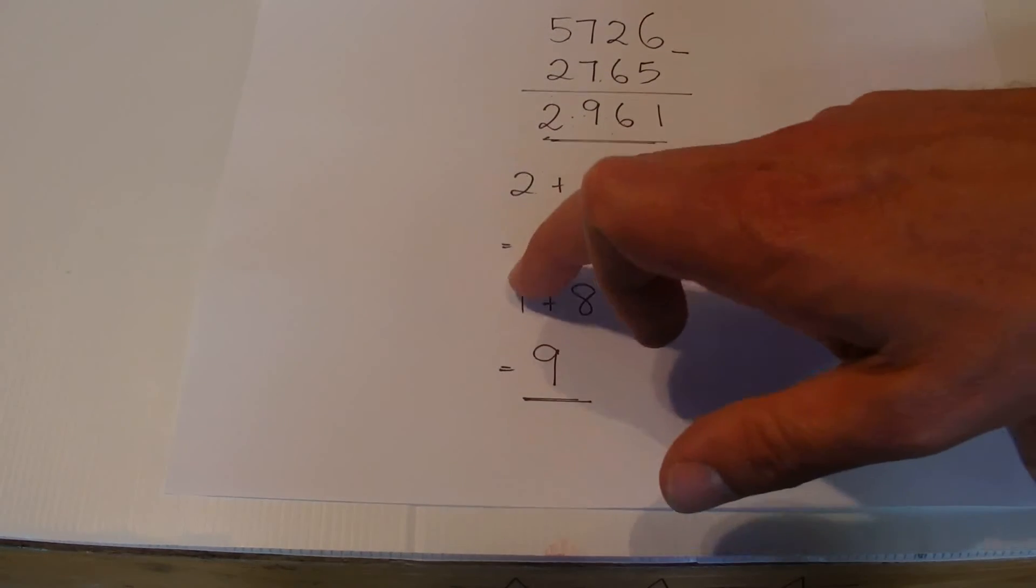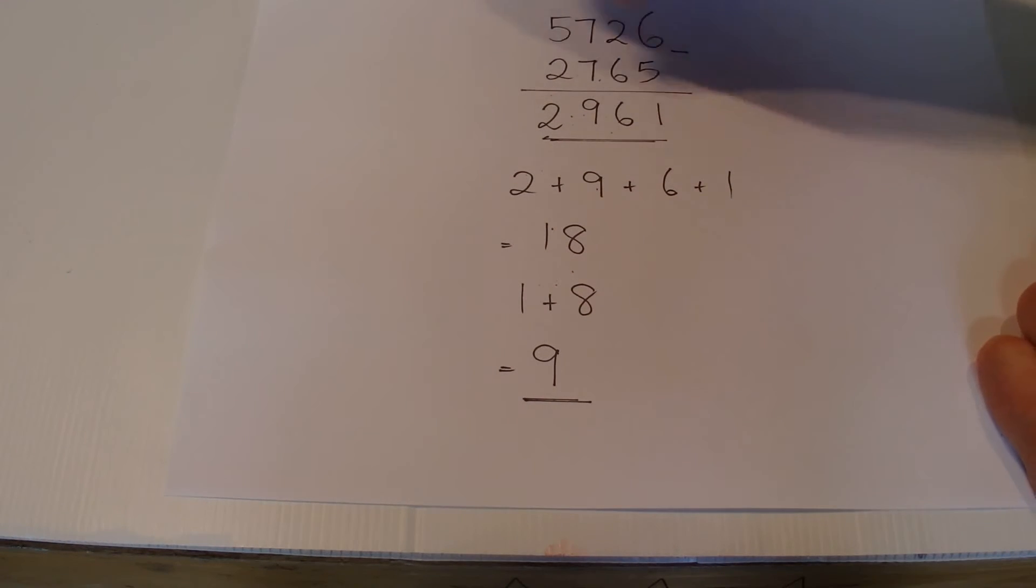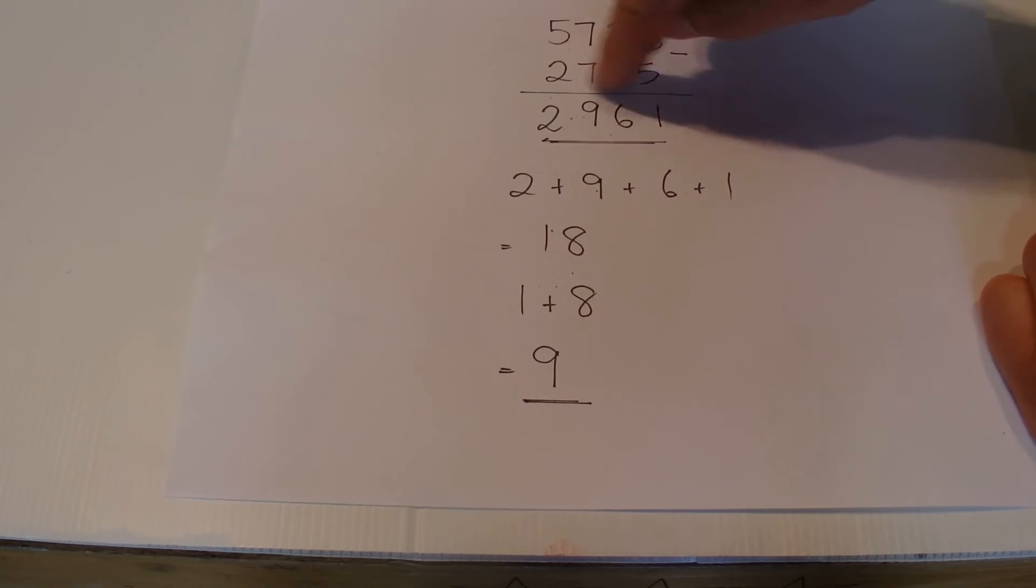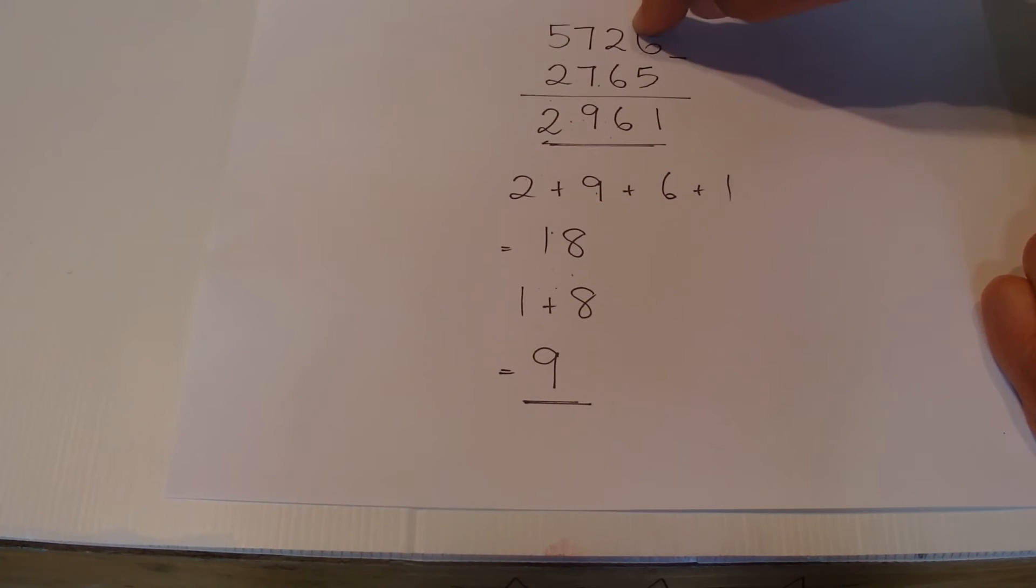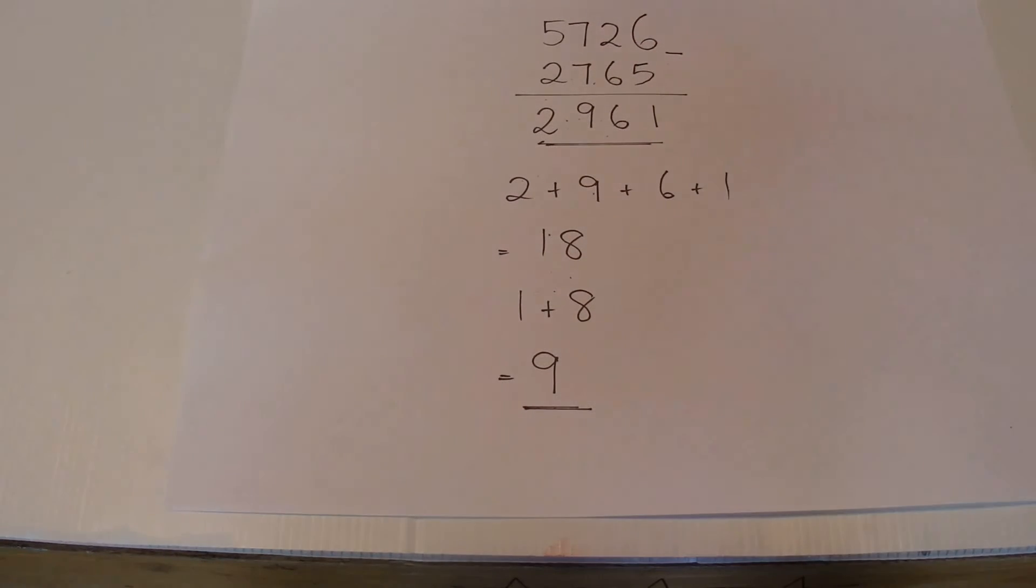Then from the 18, 1 plus 8 equals 9. So no matter what number you start with, whenever you rearrange those same digits into a different number and find the difference, you'll always come back to the answer of 9.